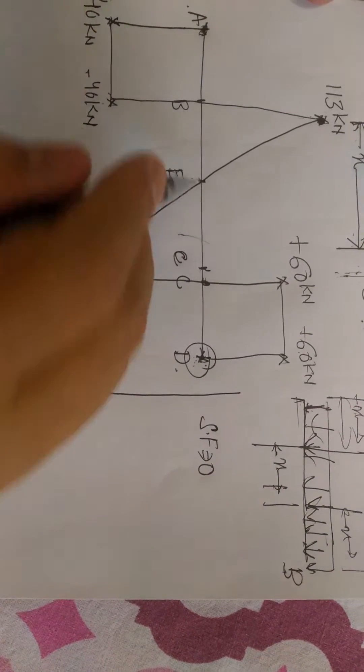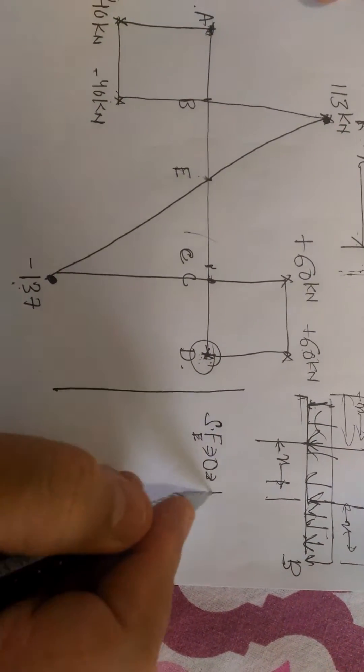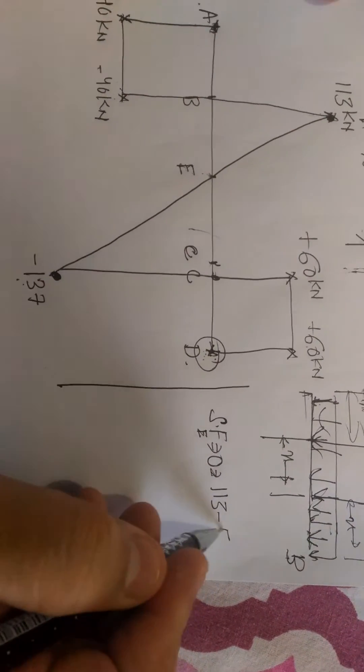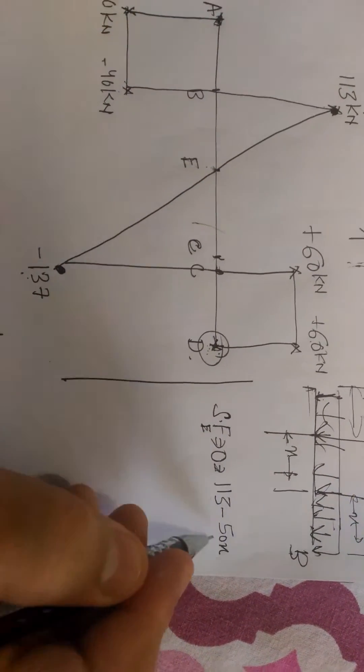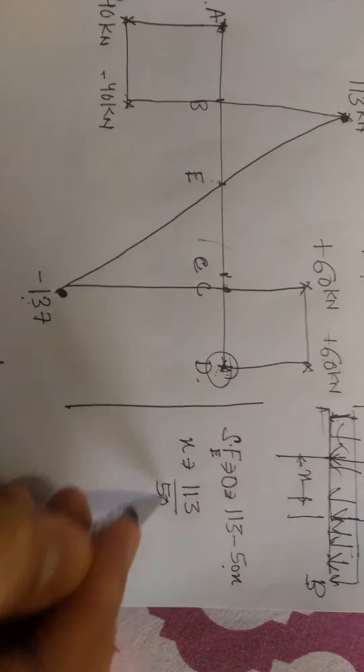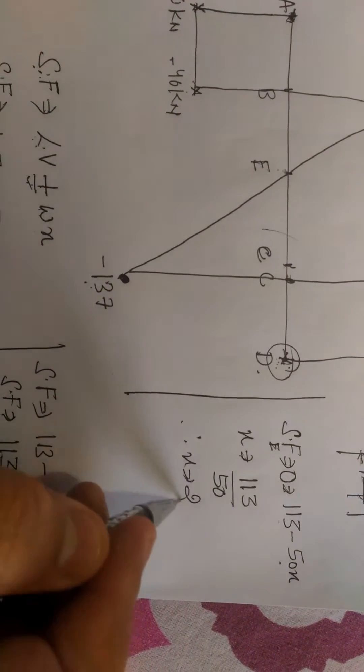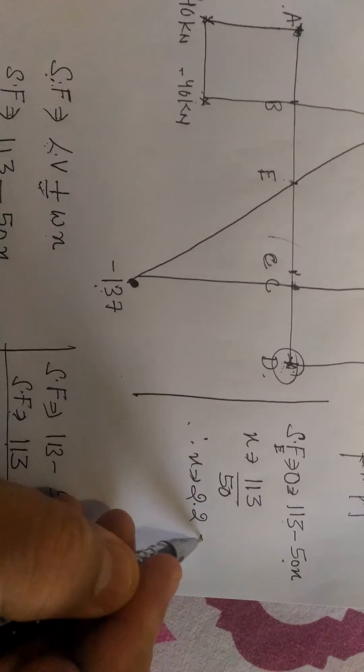Shear force at point E is equal to zero. That equals 113 minus 50x. Solving this equation, you will get x equals 113 by 50. Therefore, x equals 2.26 meters.